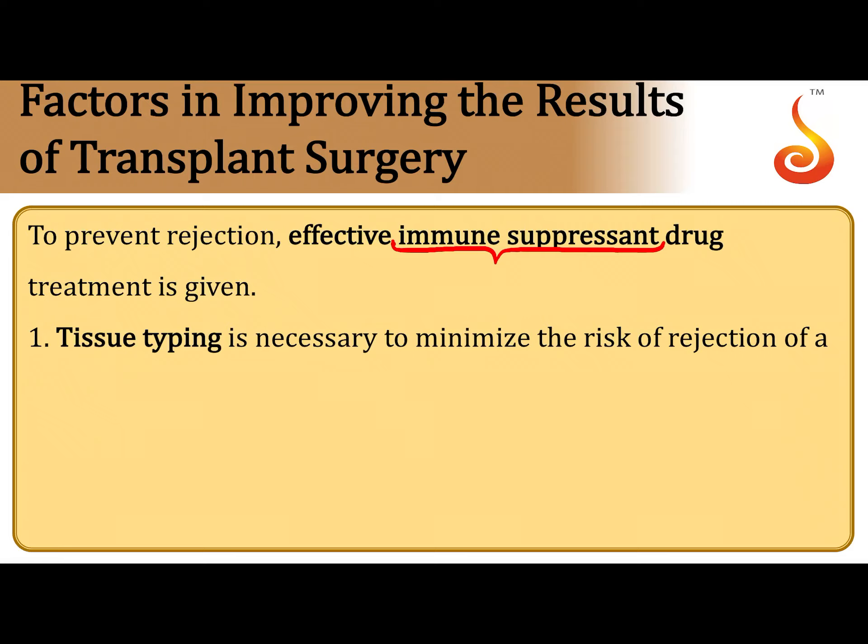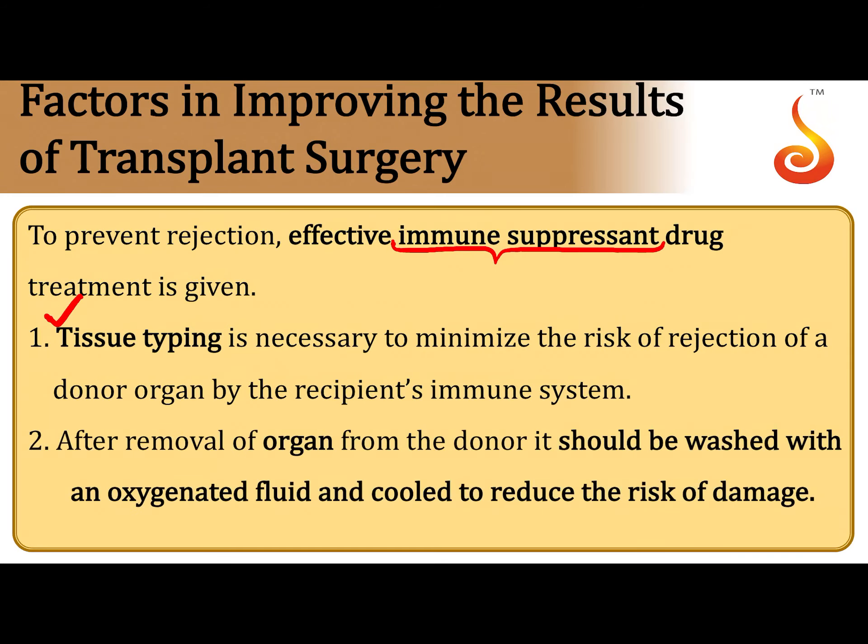Before conducting the transplantation surgery, something called tissue typing needs to be carried out to ensure minimized risk of rejection. There are receptors on our body cells that need to be matched between the donor and the recipient. That's why it's ideal if the donor is a family member or someone genetically related to the recipient — that way the chances of rejection would be nil. Blood testing and tissue typing are very important to match the type of receptors present on each and every cell.